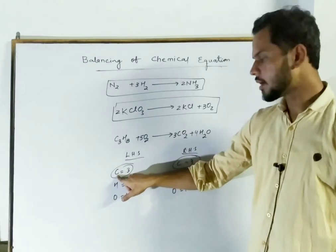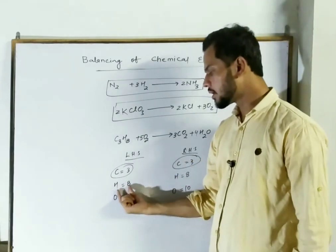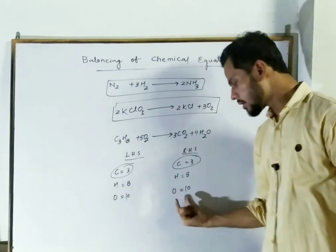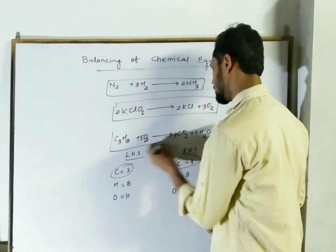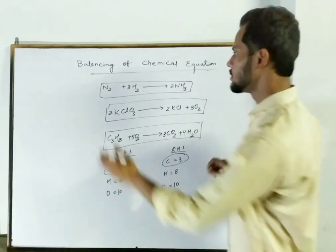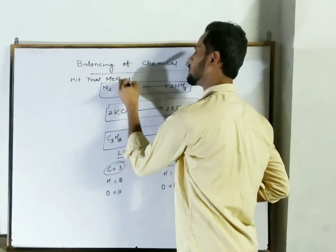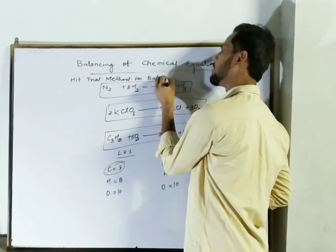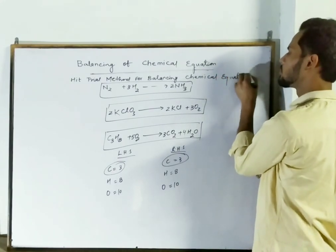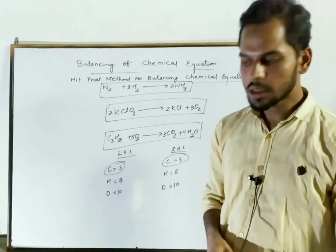Now the number of carbon is 3 on LHS and 3 on RHS, hydrogen is 8 on both sides, and oxygen is 10 on both sides. So now this reaction is a balanced chemical reaction. This balancing method is known as the hit and trial method. Use this method to balance other chemical equations as well.